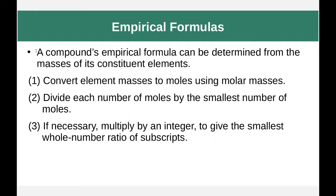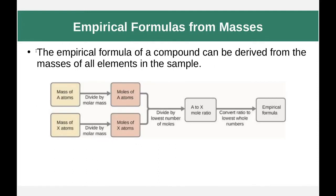A compound's empirical formula can be determined from the masses of its constituent elements. There are three steps: first, convert the element masses to moles. Then, divide each number of moles by the smallest number of moles. And finally, if necessary, multiply by an integer to get whole values. On our flowchart, we start with masses, divide by molar masses to get moles, divide by the lowest number of moles to get a mole ratio, then convert that to whole values — since we might wind up with fractions.